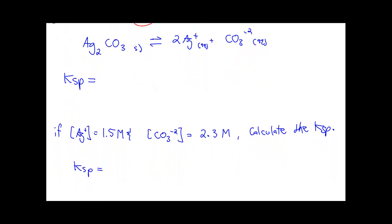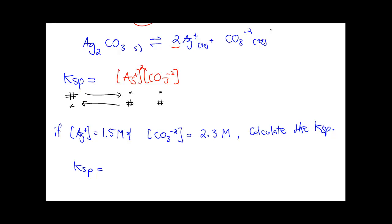Here is a very general outline of the two types of questions that we're going to do tomorrow. Here's my equilibrium equation: silver carbonate double arrow into 2Ag⁺ and CO₃²⁻ — the ions are aqueous. So if I'm writing out my KSP expression, it's Ag⁺ times CO₃²⁻, and the coefficient is an exponent, so Ag is squared. There are two types of questions: I'm going to give you the KSP number and you solve for the concentrations, or I'm going to give you the concentrations and you multiply them together to solve for the KSP.